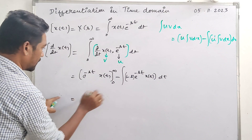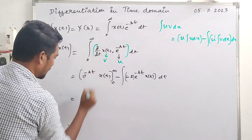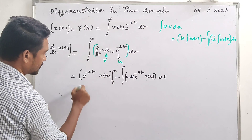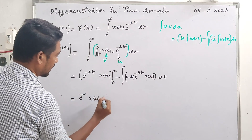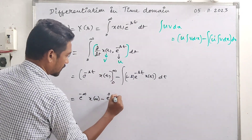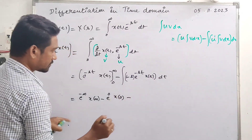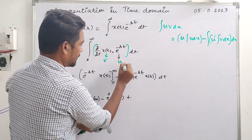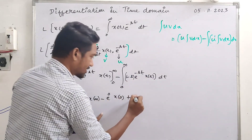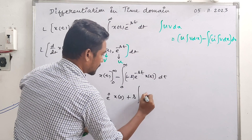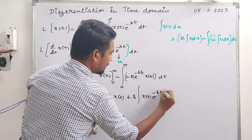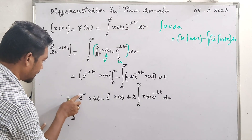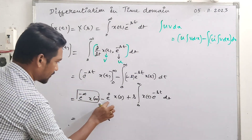We expand and plug in the limits. For the upper limit, t goes to infinity: e raised to minus infinity. The negative exponent at t equals infinity gives e raised to minus infinity, and x(infinity). For the lower limit, t equals 0: e raised to 0 gives 1, into x(0). Then minus, and the remaining integral from 0 to infinity — minus s times e raised to minus st — the two negatives give a positive. So we have plus s times the integral from 0 to infinity of x(t) e raised to minus st dt.